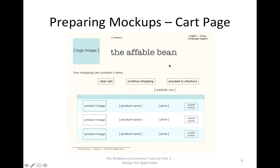The cart page lists all items held in the user's shopping cart. It displays product details for each item and shows the subtotal for each item. From this page, the user can clear all items in the shopping cart, update the quantities for any listed item, continue shopping to return to previous categories, or proceed to the checkout page.